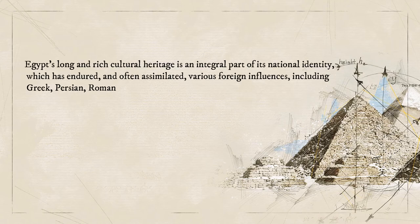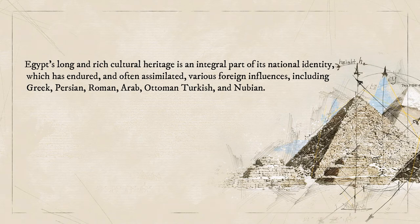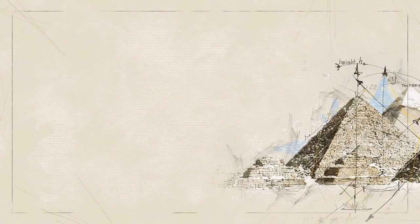Egypt's long and rich cultural heritage is an integral part of its national identity, which has endured and often assimilated various foreign influences, including the Greek, Persians, Roman, Arab, Ottoman Turkish, and Nubian. So now, let's take a glimpse of the past.